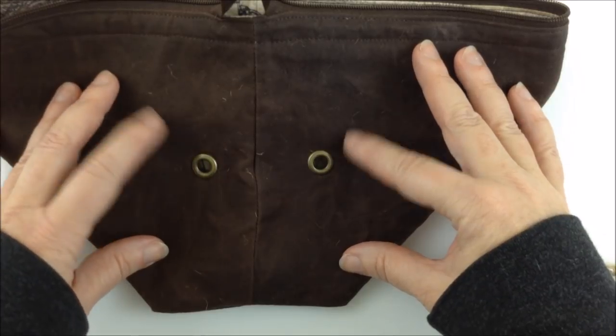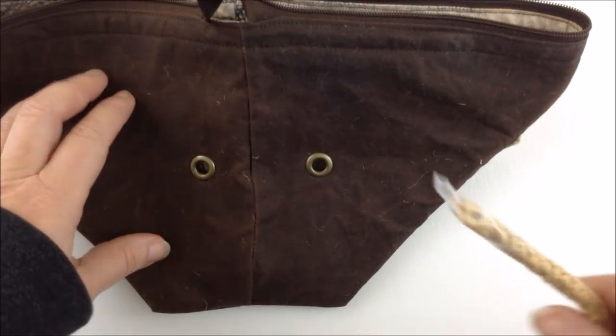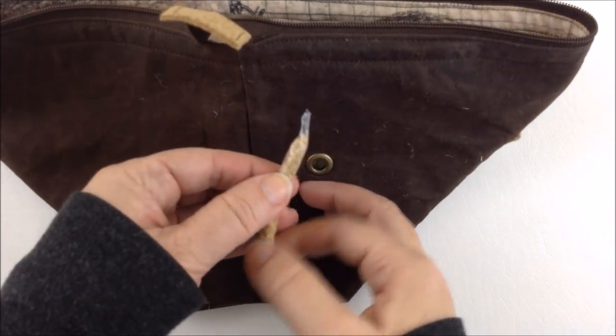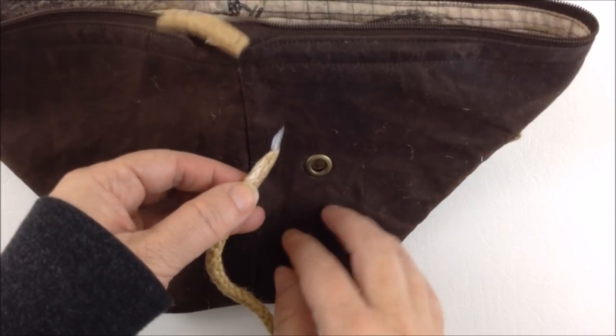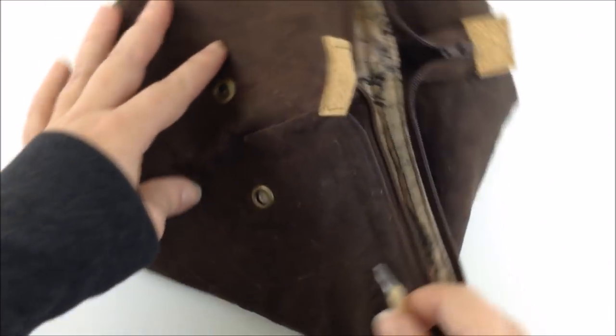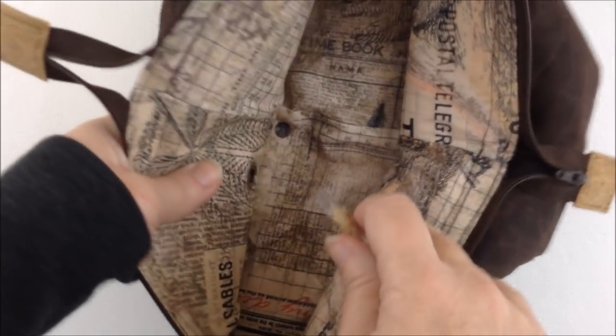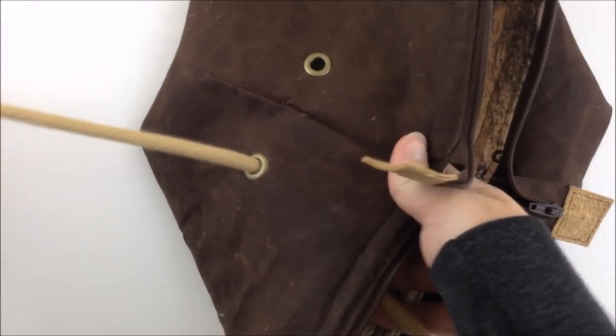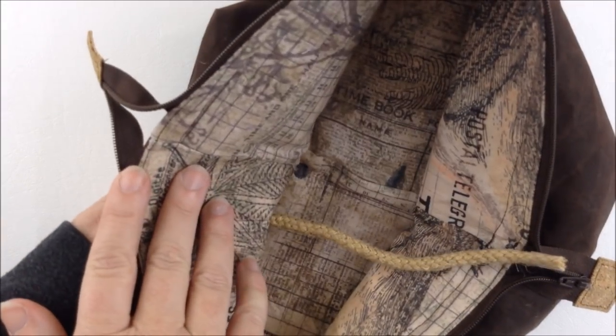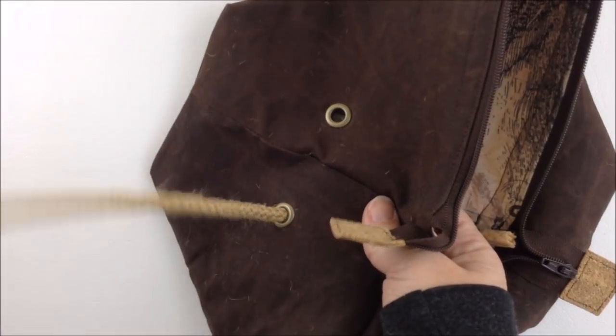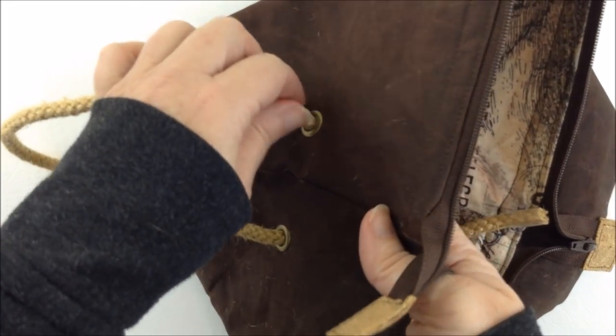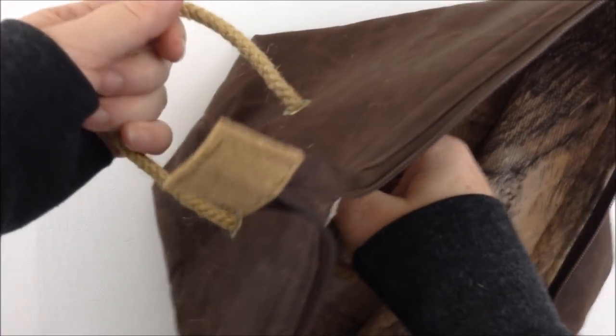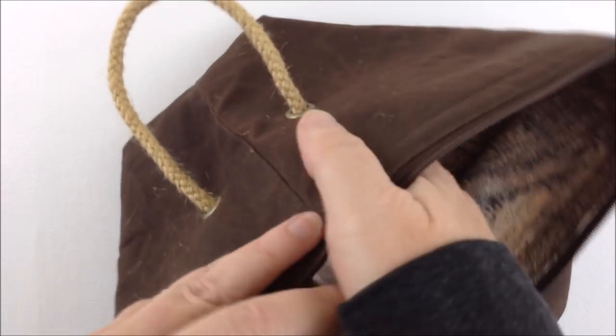Now that your eyelets are inserted we're going to make the rope handle. So take your rope or cord, again it's half a yard and I've just put some tape over the end to make threading through the grommets a little easier. So take the rope or cord and you're going to start on the inside, thread it through the eyelet, pull it through remembering to leave a tail at the back. Then thread that end through the other hole or the other eyelet and pull it through and that looks about a good length there.